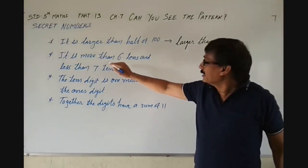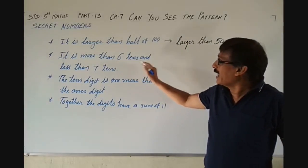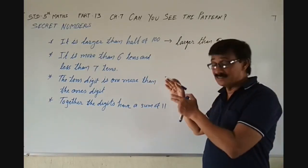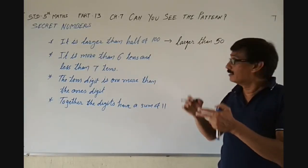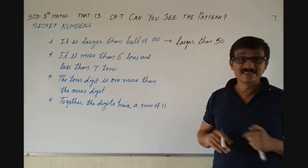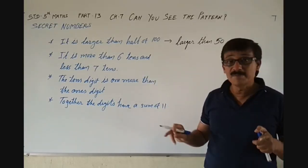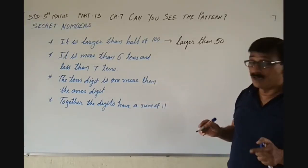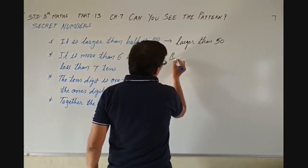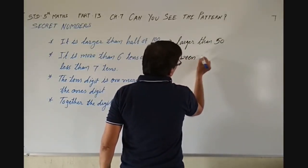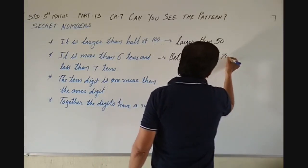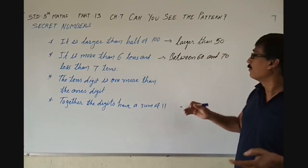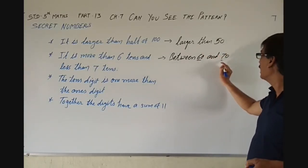Another clue: it is more than 6 tens and less than 7 tens. 6 tens means 60 and 7 tens means 70. So the number is between 60 and 70. We know the number is larger than 50, and now we know it is between 60 and 70.